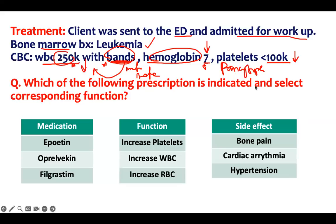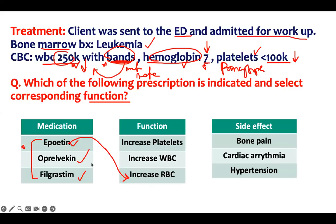Which of the following prescriptions is indicated? Select the corresponding function and side effect. What would you give this patient who has anemia, low platelets, and leukocytosis with ineffective bands? You have to know this — this is hematology. There are three medications: epoetin, oprelvekin, and filgrastim. Epoetin is responsible for red blood cells, oprelvekin increases platelets, and filgrastim takes care of the WBCs.